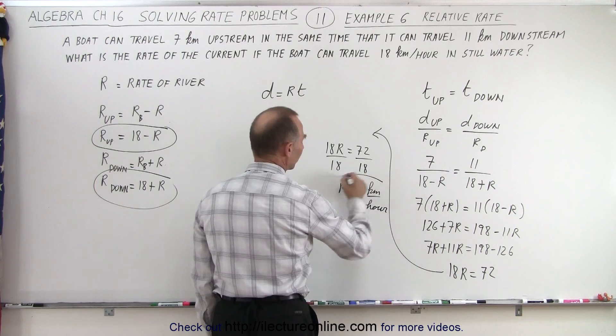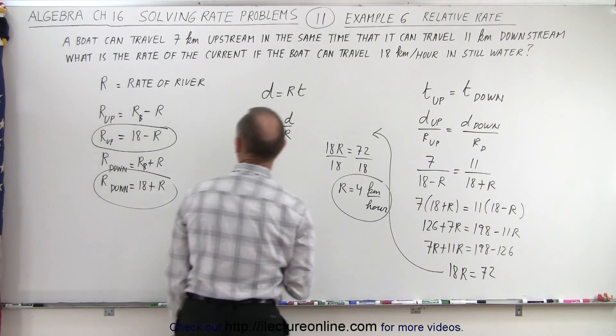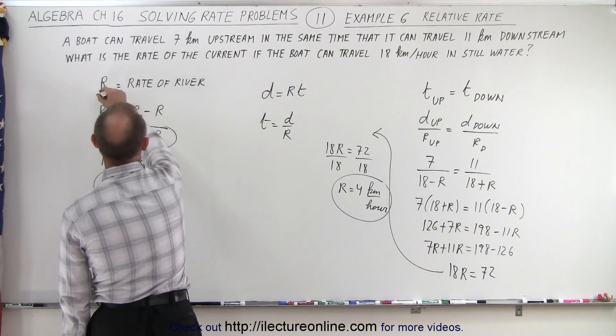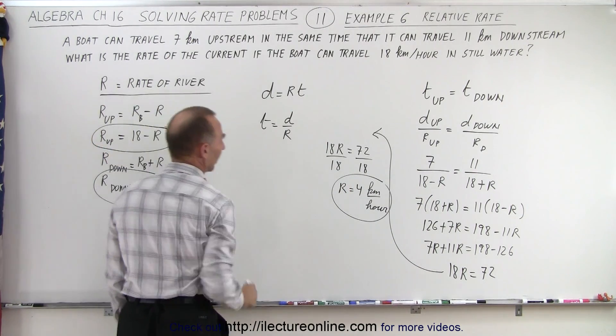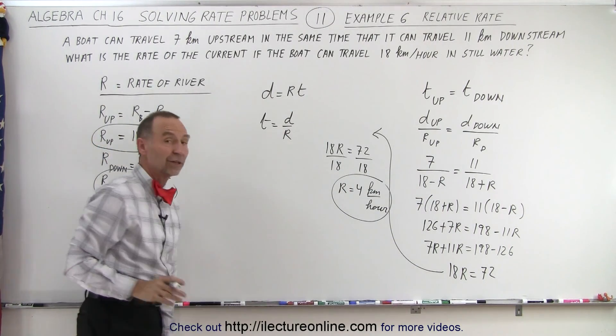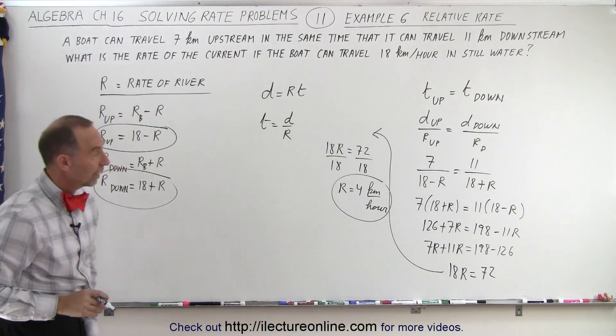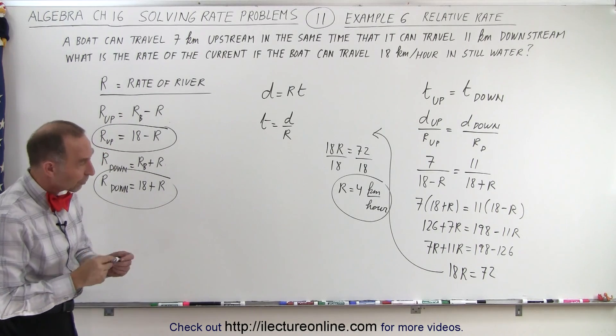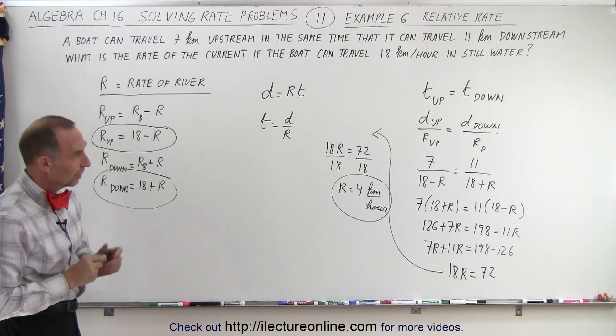Remember, we defined r as the rate of the river, so the river is flowing at 4 kilometers per hour. And that's how it's done.